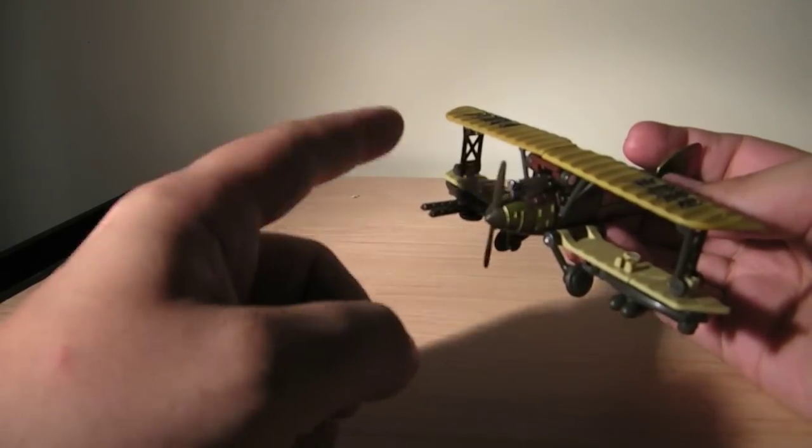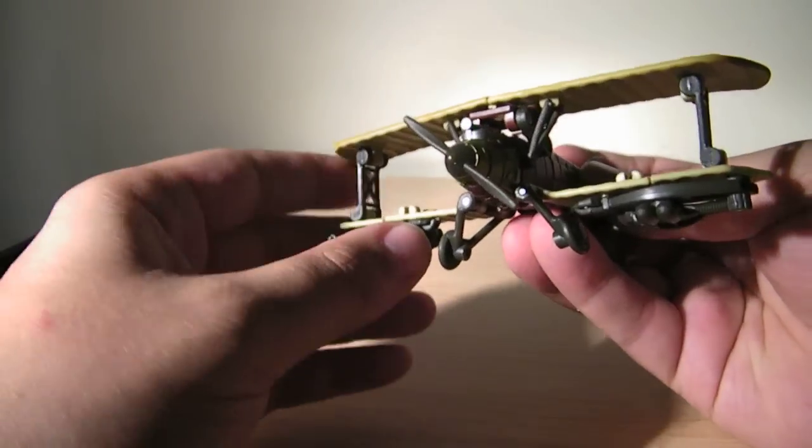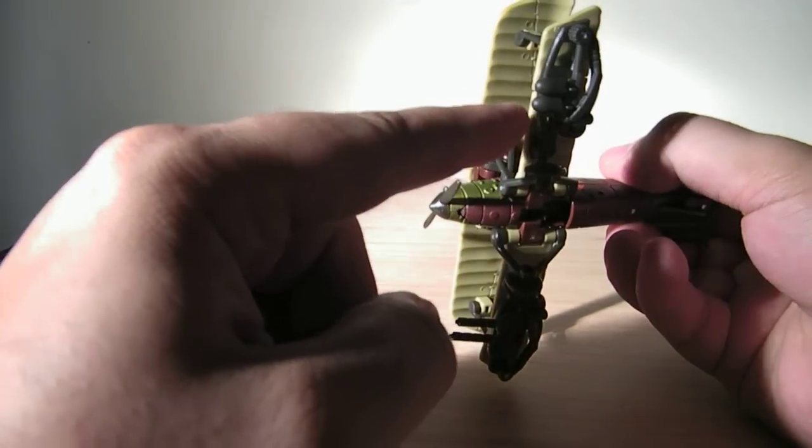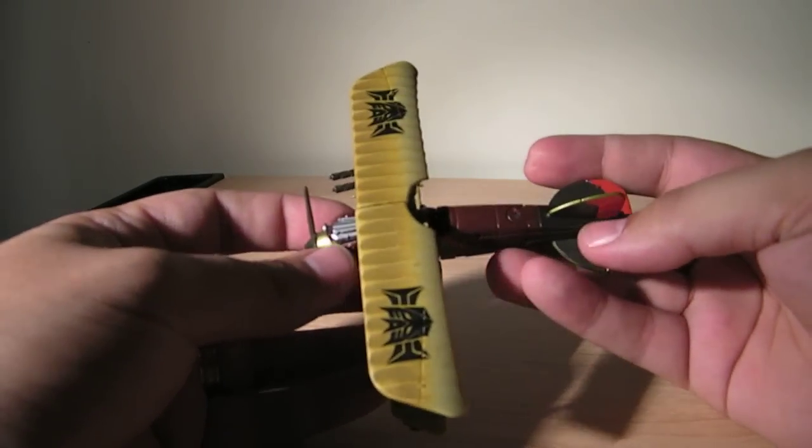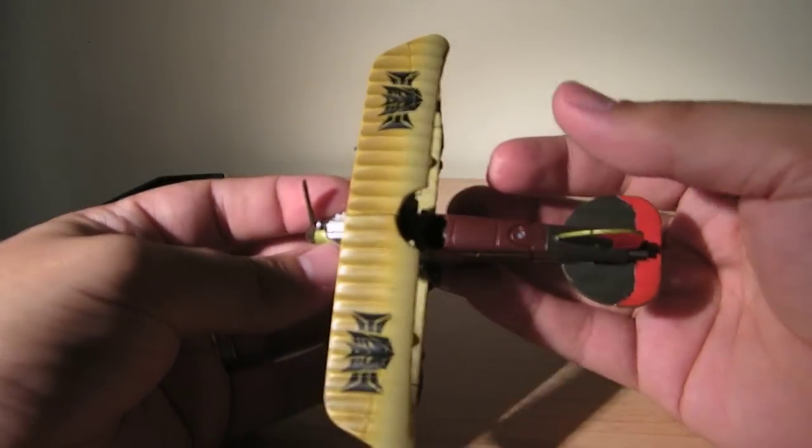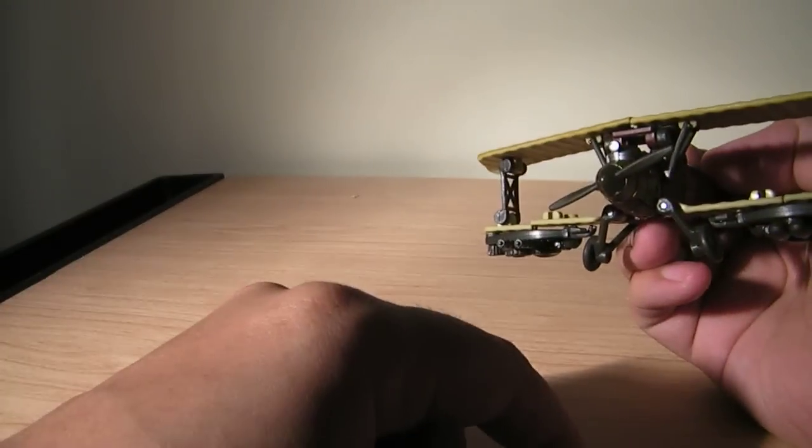His propeller spins. He's got a machine gun over here under one arm and a couple bombs over here on the other. A really neat little figure, just for its unique alt mode, a neat little biplane, which you don't usually see many of in Transformers.